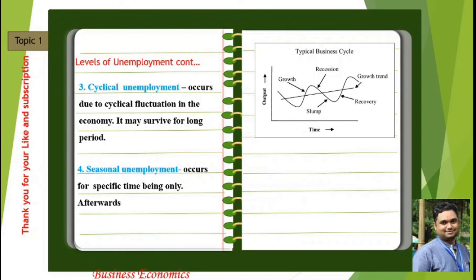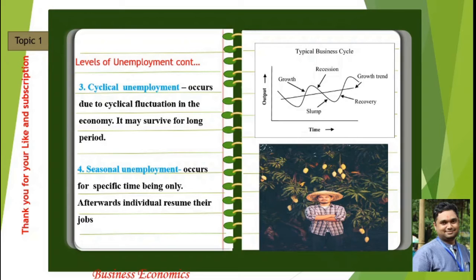Next is seasonal unemployment. This occurs for a specific time period only, after which individuals can resume their jobs. For example, mango farmers — from December to July, farmers engaged in mango cultivation are actively working. But after the rainy season, there is no requirement for mango farming or processing, so for those three to four months they are unemployed. This is termed seasonal unemployment.